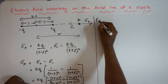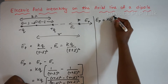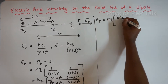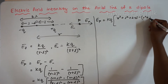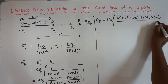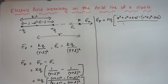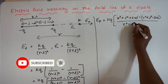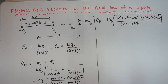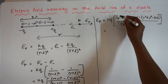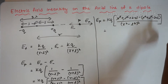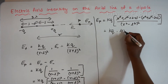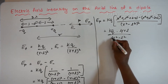Expanding using the identity (a plus b) squared minus (a minus b) squared: we get a squared plus b squared plus 2ab minus (a squared plus b squared minus 2ab). The denominator (R minus L) squared times (R plus L) squared can be written as (R squared minus L squared) squared. In the numerator, R squared cancels, L squared cancels, and 2RL minus (minus 2RL) gives 4RL. So we have KQ times 4RL divided by (R squared minus L squared) squared.